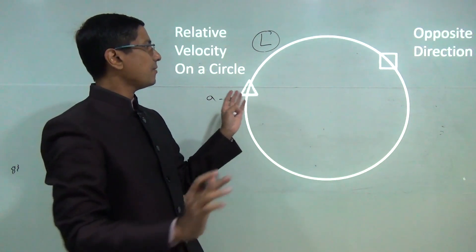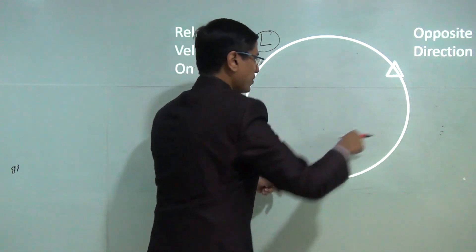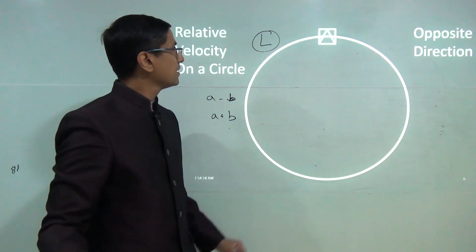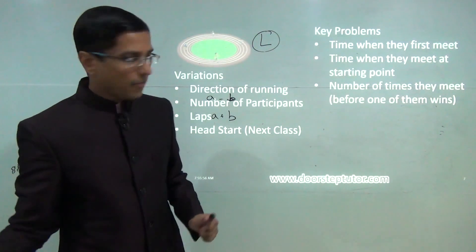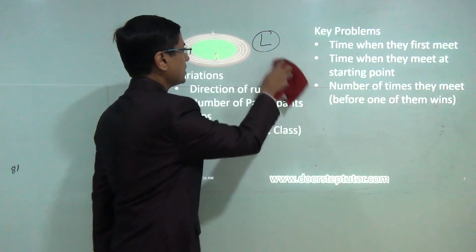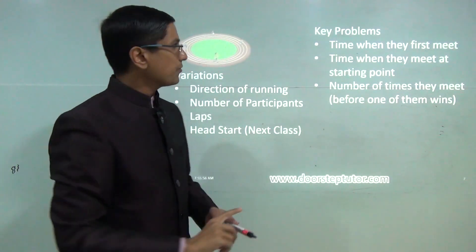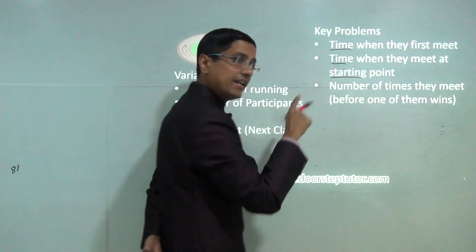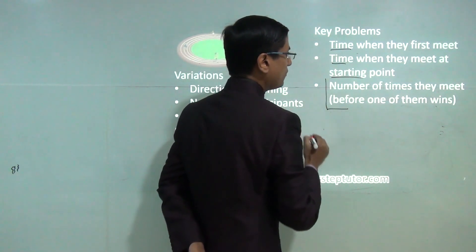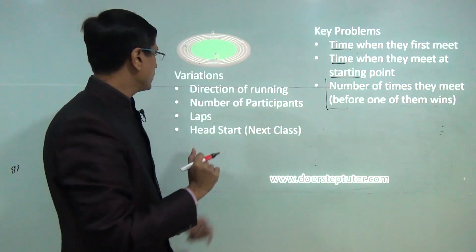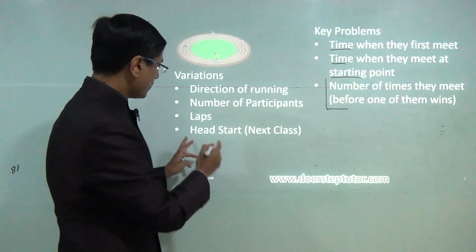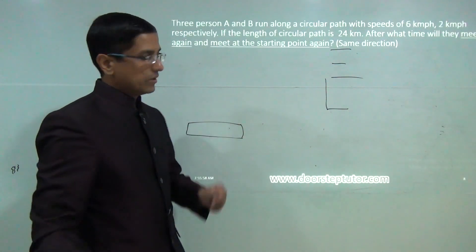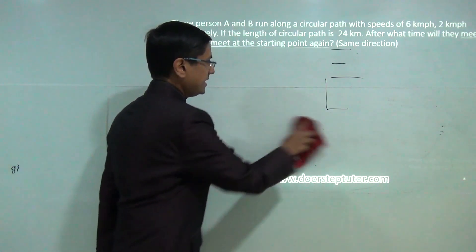In the opposite direction case, the distance increases faster — relative velocity is A plus B — and they meet when it reaches L. Based on these concepts, there are a number of problems formed in examinations. Typically asked: when do they first meet anywhere on the circle, when do they first meet at the starting point, and how many times do they meet? Problems involving head starts on circular tracks will be discussed in the next class.